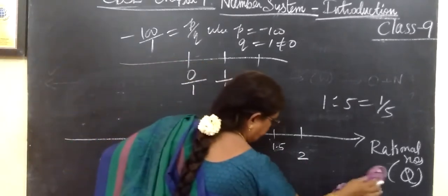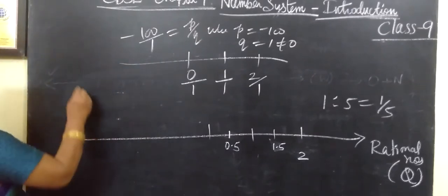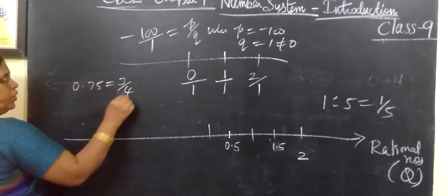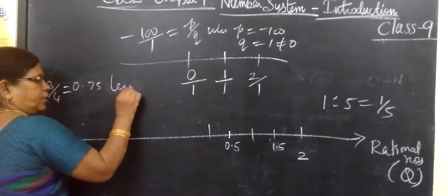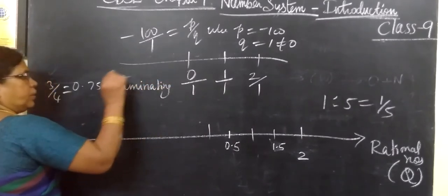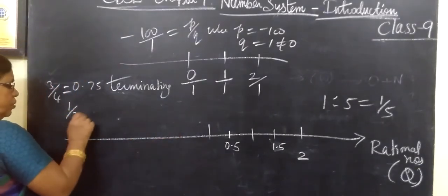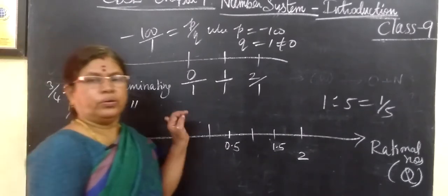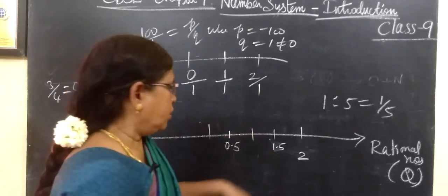For example, 3 by 4 equals 0.75 — here it is terminating. Terminating means it is ending; the value ends. And 1 by 2 is also terminating. So one thing we know now is that the decimal expansion can be terminating.